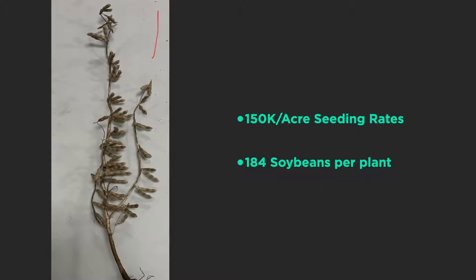I pulled some plants out of the field at harvest time, and I want you to take a look at the 150,000 seeding rate plant. Here's my problem with high-population soybeans: we get one main stem. This plant actually has one branch coming off to the side, but that's not enough real estate. Most of the time we're going to get 22 to 23 nodes on a soybean plant — and that's just not enough.